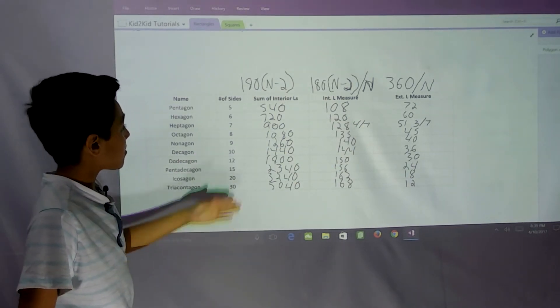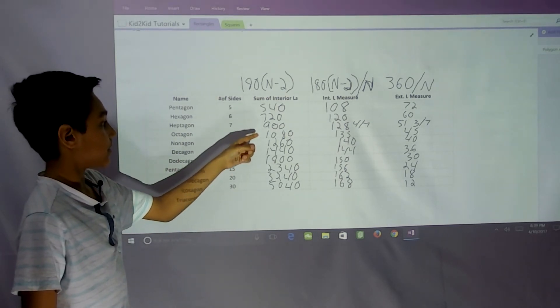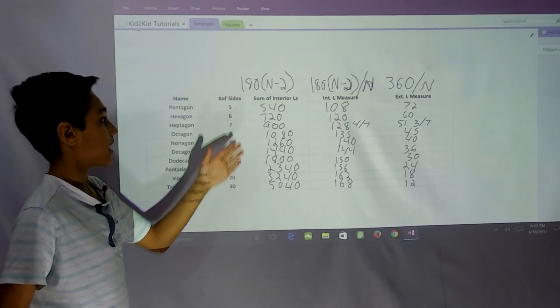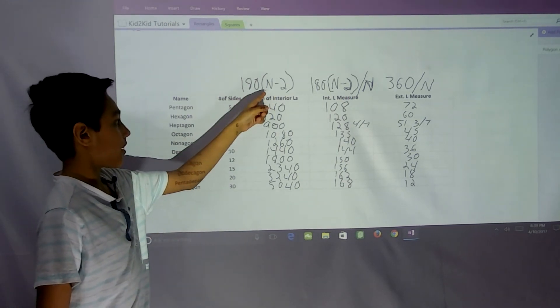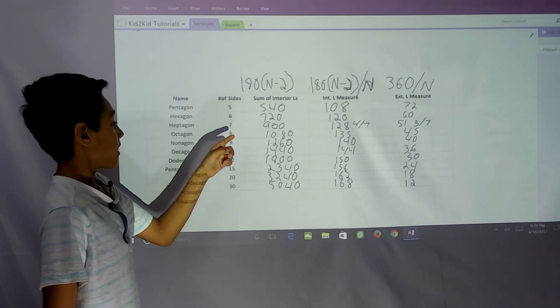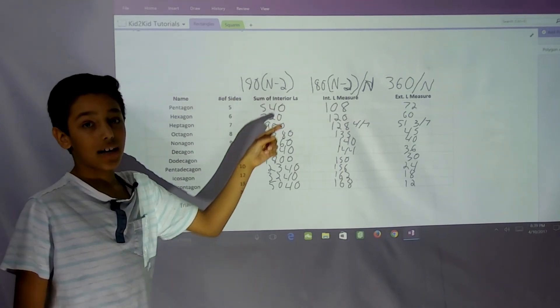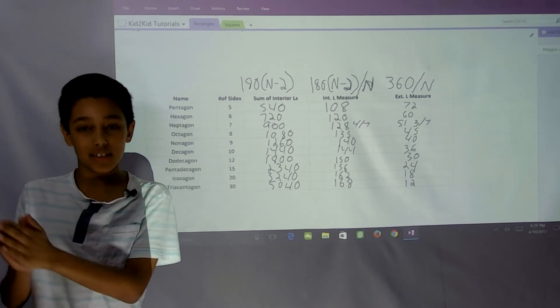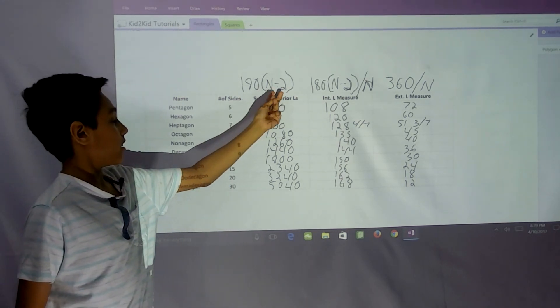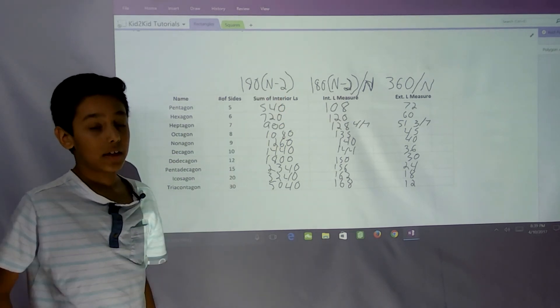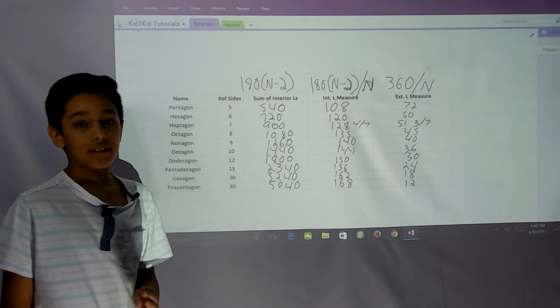These numbers increase, and notice the sum of the interior angles is 540, then 720. The difference is 180. If you plug in 5 you get 3, if you plug in 6 you get 4, 7 you get 5. It keeps increasing by 180 while the number inside the parentheses increases by 1 every time the number of sides goes up by 1.